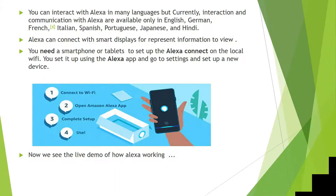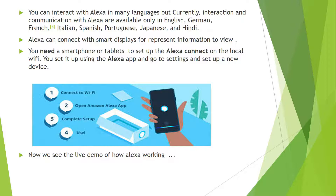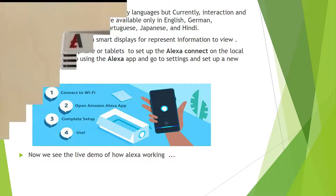You can interact with Alexa in many languages, but currently interaction and communication with Alexa are available only in English, German, French, Italian, Spanish, Portuguese, Japanese, and Hindi. Alexa can connect with smart displays to represent information visually. You need a smartphone or tablet to set up Alexa and connect it to the local WiFi. You set it up using the Alexa app by going to settings and selecting set up a new device.